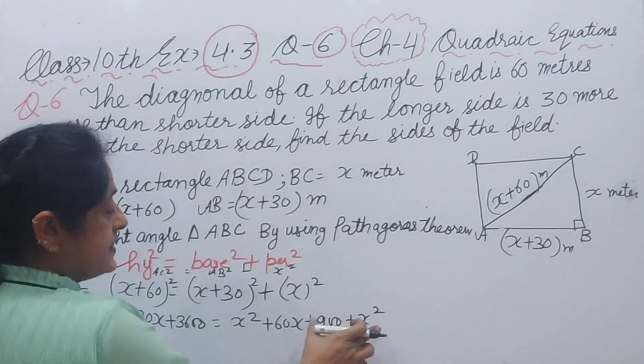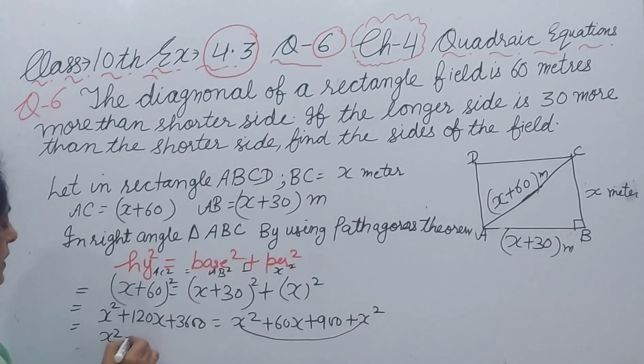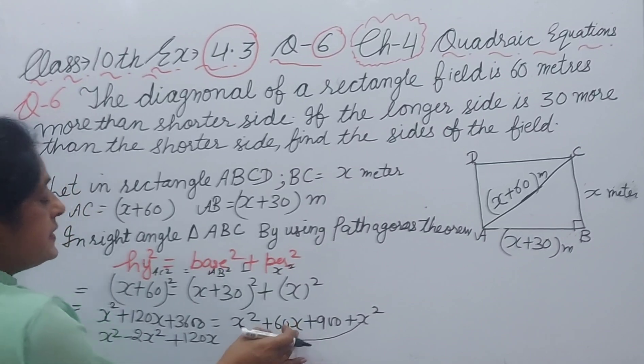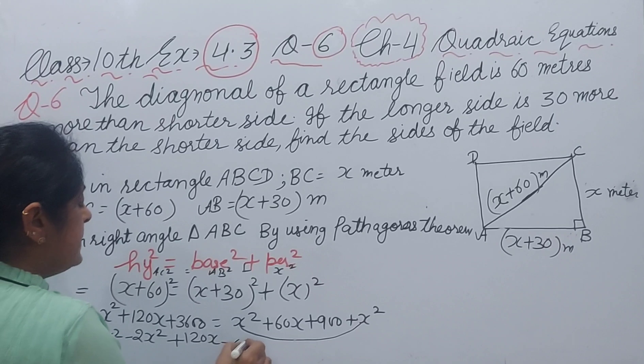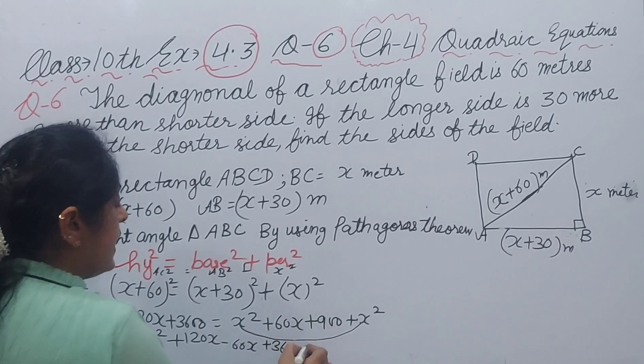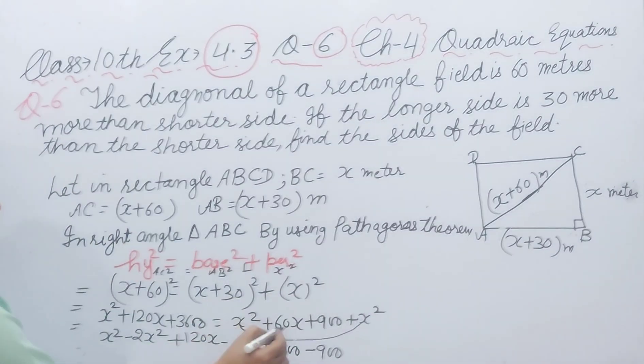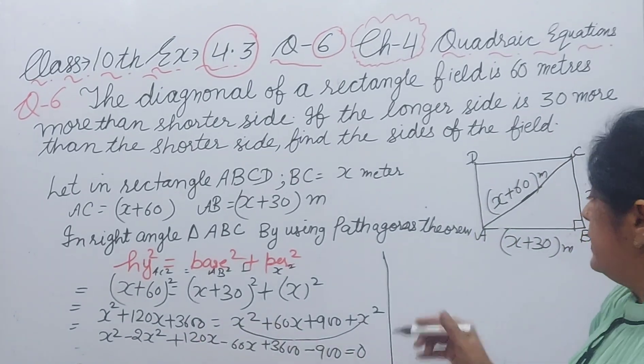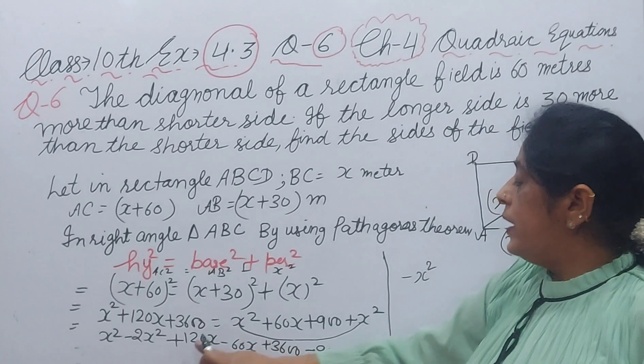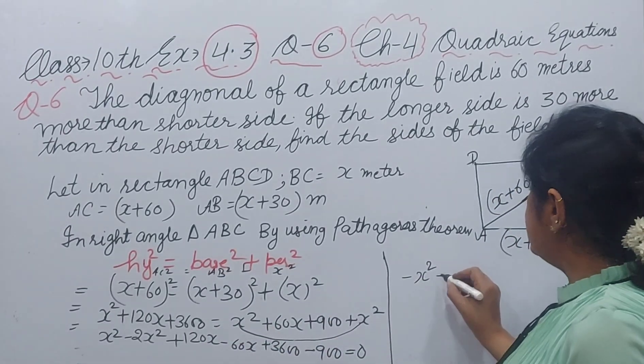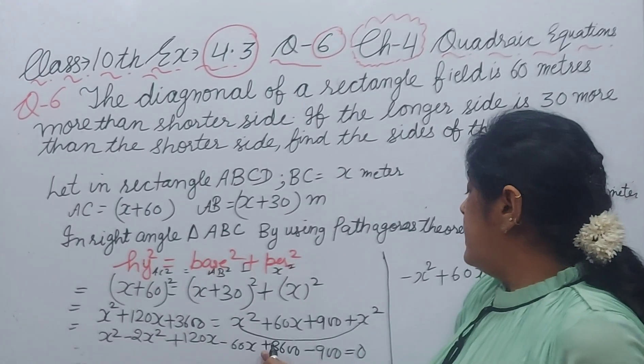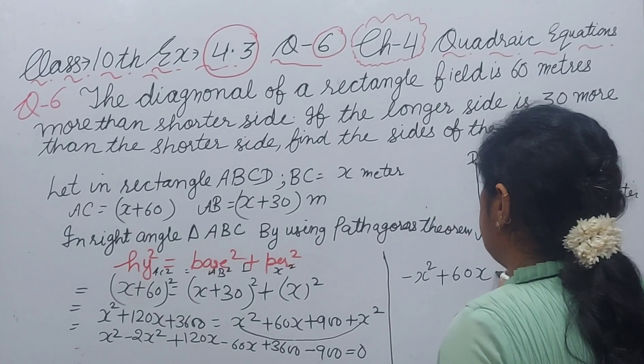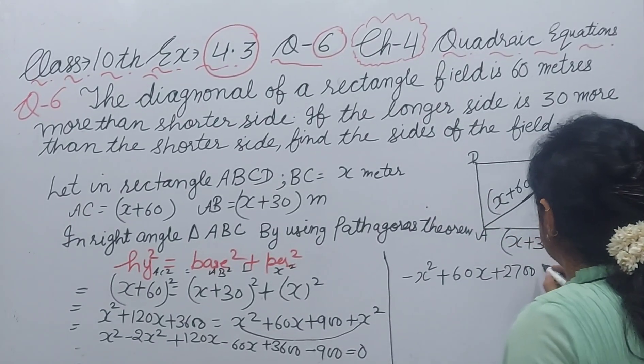X square plus X square, we will add 2X square. 2X square will come here, minus 2X square, plus 120X, and here is 60X. When it come in left hand side, side will be changed, minus 60X, plus 3600, and 900 will come in left hand side and sign will be changed, and will be equal to zero. X square minus 2X square, it will be minus X square, 120X minus 60X, plus 60X. Now 3600 minus 900, it will be 2700 equal to zero.